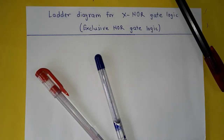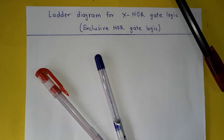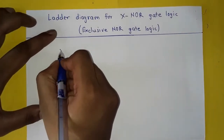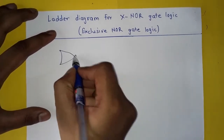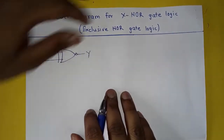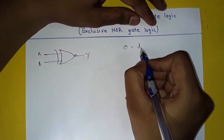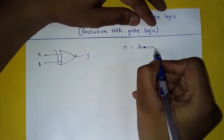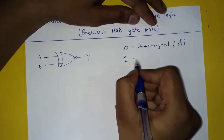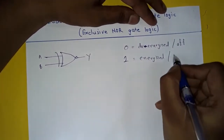Hi friends, welcome to my channel. In this video I am going to explain how to use XNOR gate logic, or exclusive NOR gate logic, in ladder diagram and its input-output conditions. This is the symbol of the XNOR gate logic — this is A, this is B, and this is Y, that is our output. Here, 0 will represent the de-energized condition of the coil, that is off condition, and 1 will represent the energized condition of the coil, that is on condition.